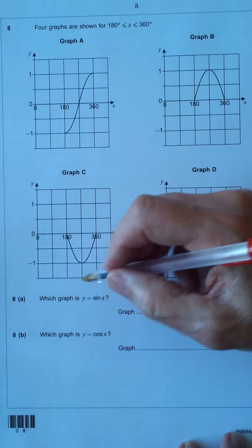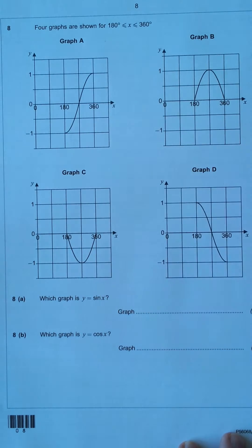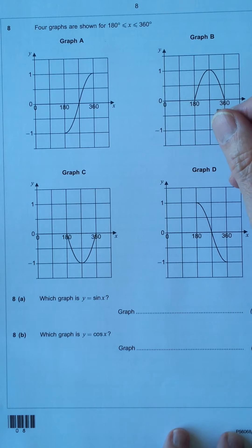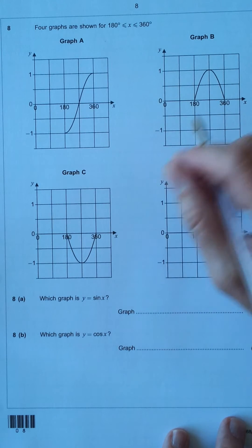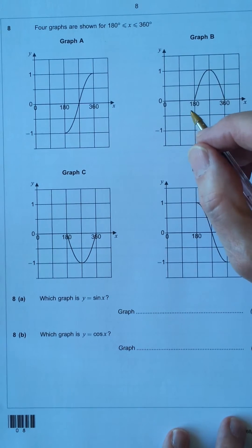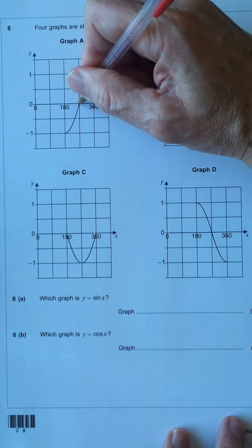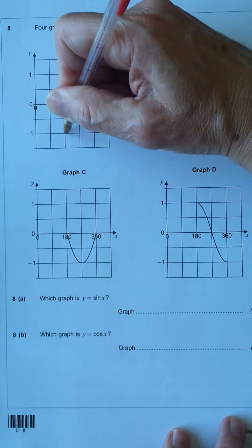And it's asking for part A, which graph is y equals sine x? For B, which graph is y equals cos x? Well, I'm going to just finish the graph up to, from 0 to 360 to make it a little bit easier. So, using symmetry, we'll just finish it off.